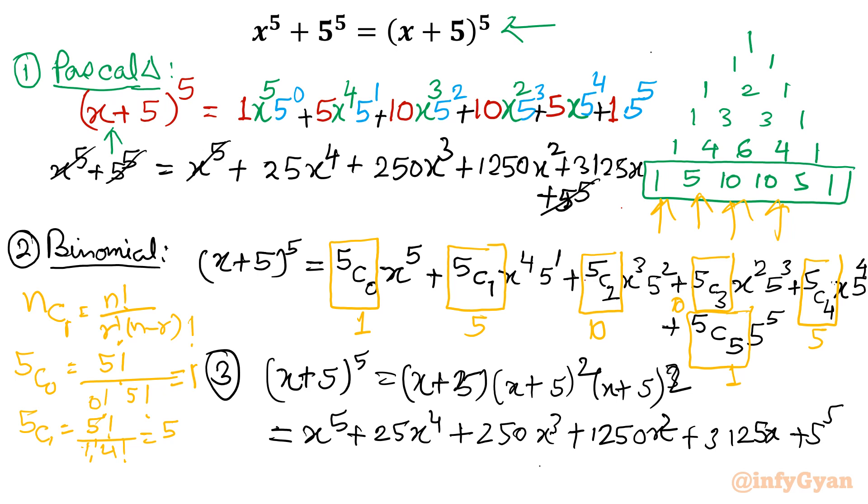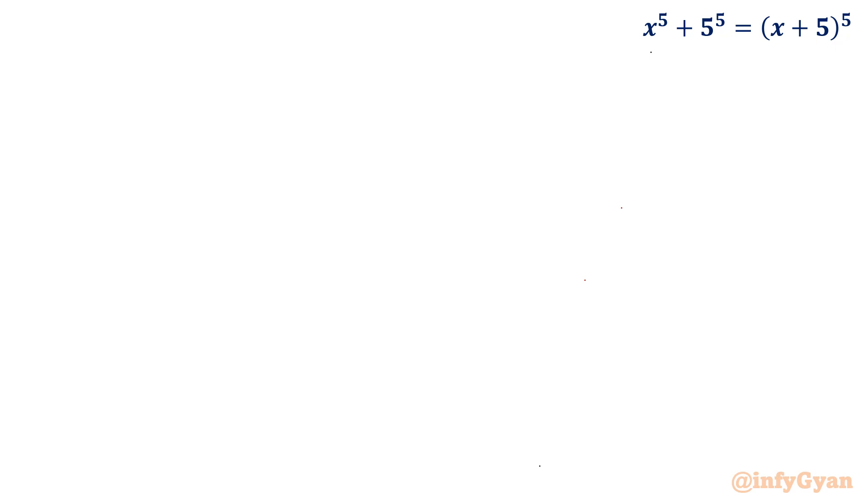Now we will cancel from left hand side the leading coefficient term x^5 and the last constant term 5^5. We will have one degree lesser, so we will get a cubic polynomial.